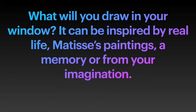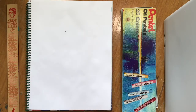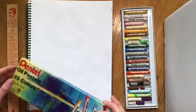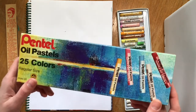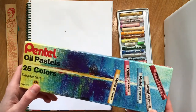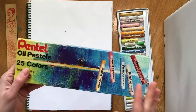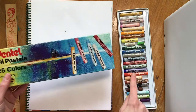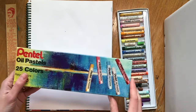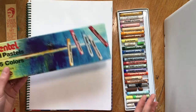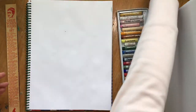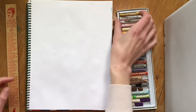Hello artists! Today we're going to do a drawing looking out of a window, and I'm going to use my oil pastels. If you've ever gotten an art set that comes in a case like a folder, you probably have oil pastels in there — check that. You can also use crayons or markers, anything that has lots of color.